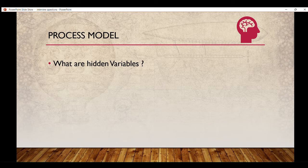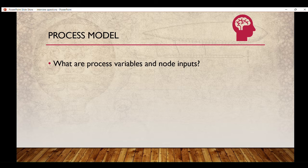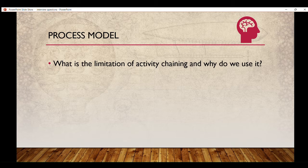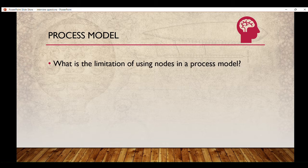I will be uploading videos soon on my channel covering the answers to these interview questions, so please subscribe. Next: what are process variables and node inputs? This is one of the most asked, most basic killer questions. After that: what is the limitation of activity chaining and why do we use it? This is a basic question and if you are an Appian practitioner you must know it.